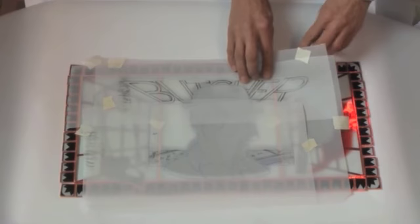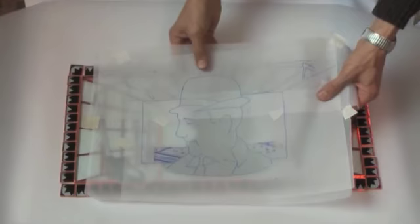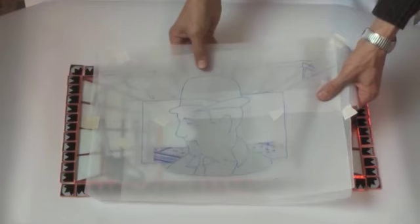And then after I did the cartoon, I had to work on the type. So I did that on tracing paper because again, you have to work from the other side. So I had to actually paint it that way. And then it all came together like this.